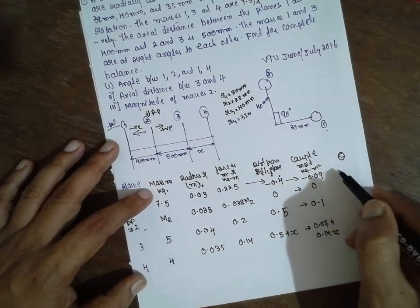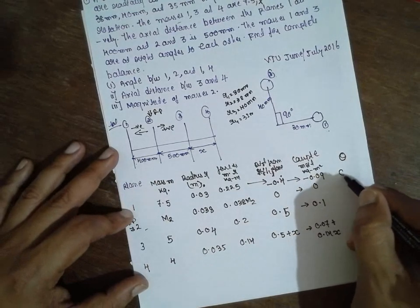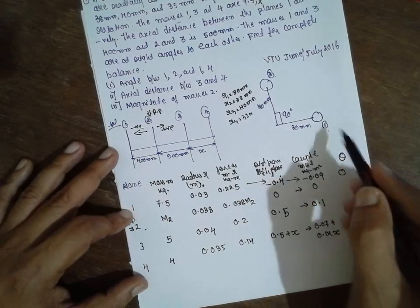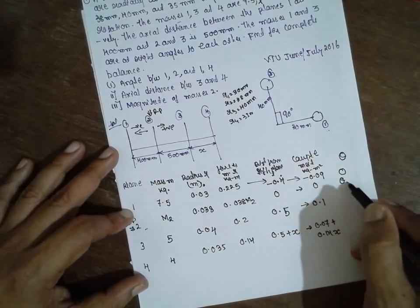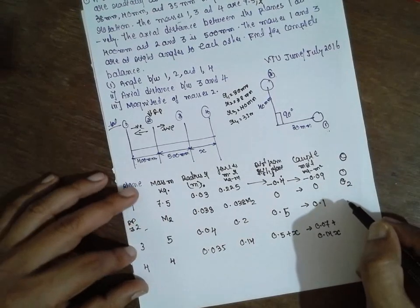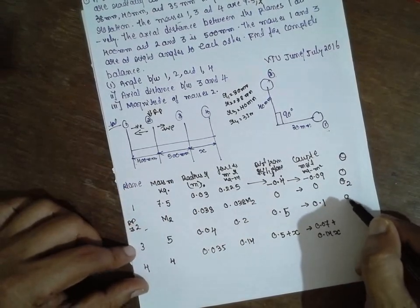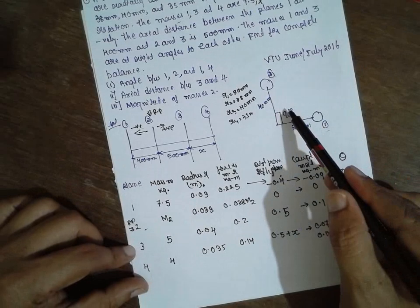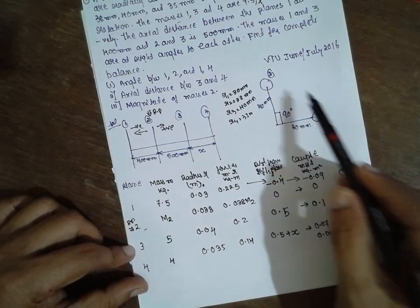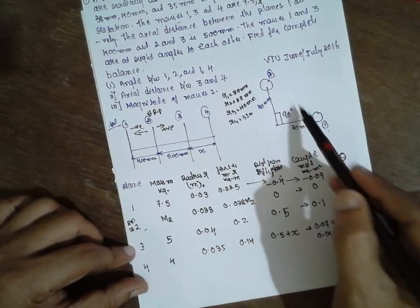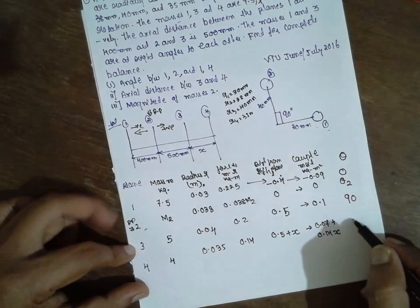The angle assignments: theta one = 0°, theta two is unknown, theta three = 90° (given that masses one and three are at right angles), and theta four is to be found out.